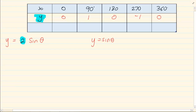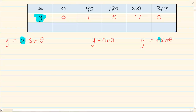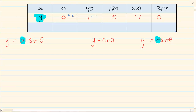Now I am adjusting the number in front, so y is equal to a sin theta. What is the effect of this number? The number in front affects your y value — what it is doing is multiplying with your y value.